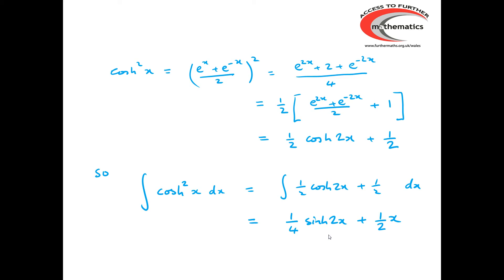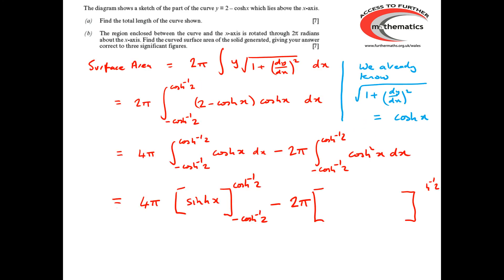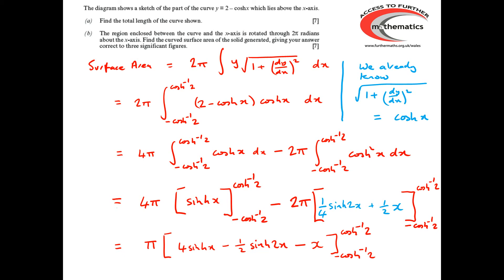There are other ways of tackling that — make sure you have one confident method for integrating cosh² x, or indeed sinh² x. Returning to where we were, we can now substitute in that the integral of cosh² x is ¼ sinh 2x + ½x. Putting the limits into those expressions, we end up with a final answer of 13.5, correct to three significant figures.